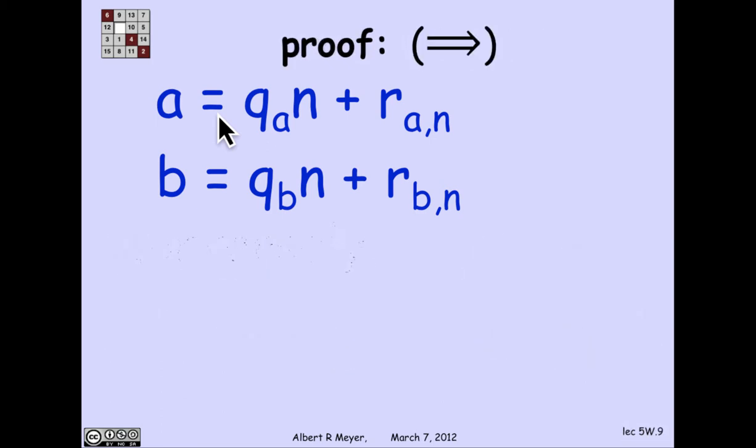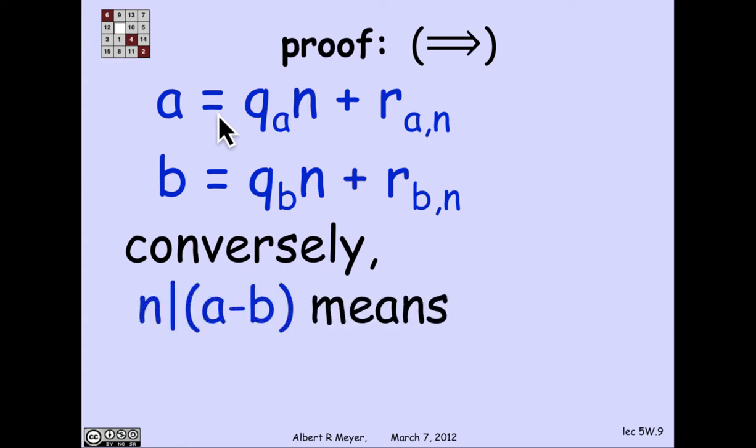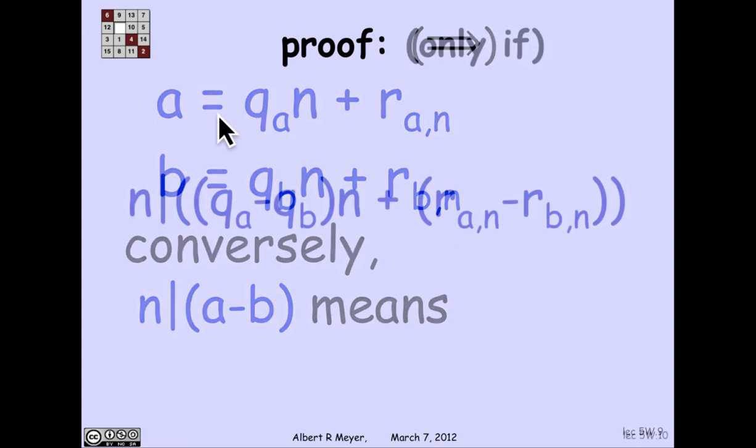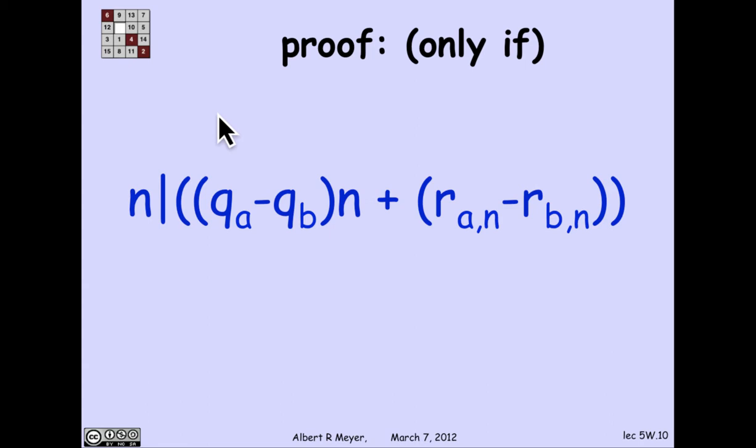The only if direction now goes from left to right. So in the converse, I'm going to assume that n divides a minus b, where a and b are expressed in this form by the division algorithm or division theorem.